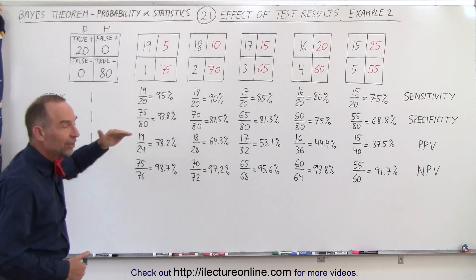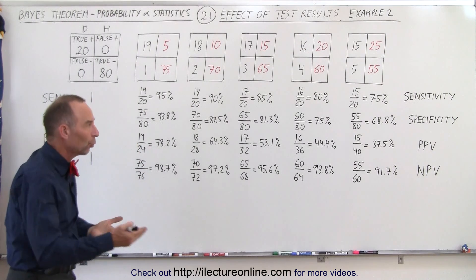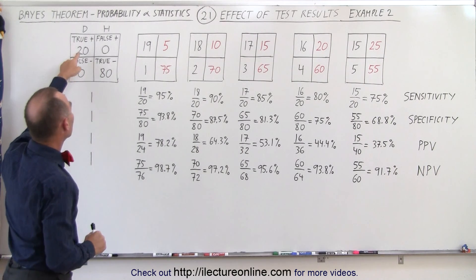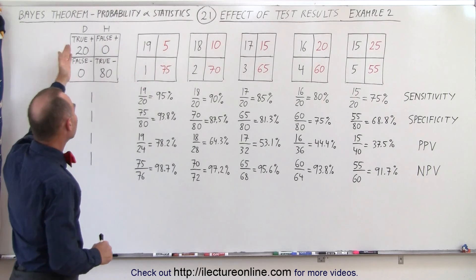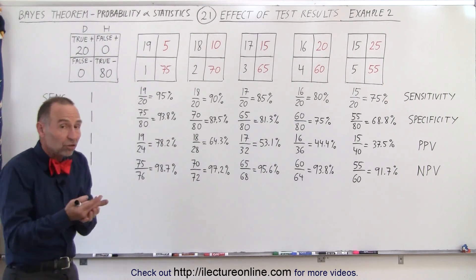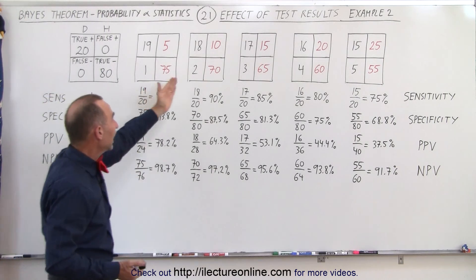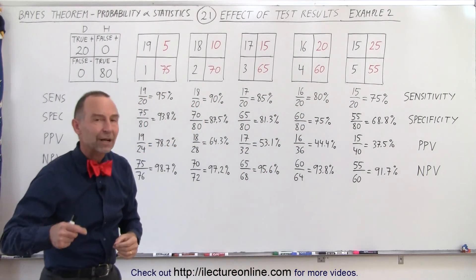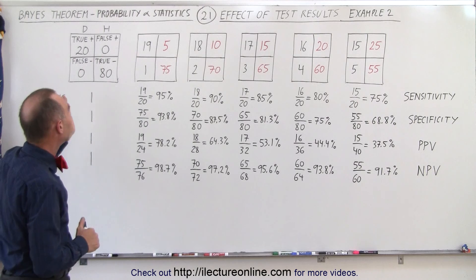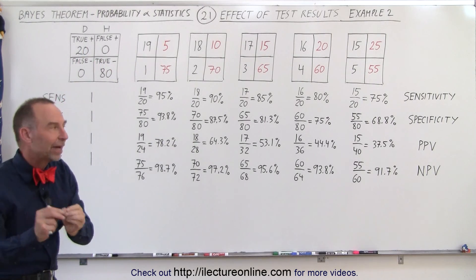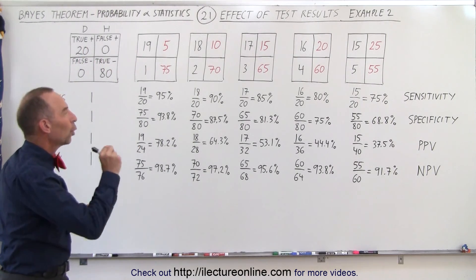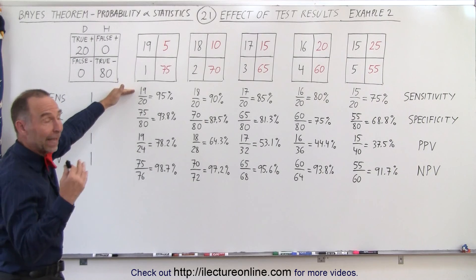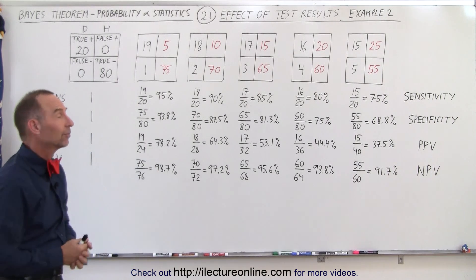It turns out that sensitivity is exactly the same in this example as it was in the previous example, because sensitivity only depends on the ratio of the number of people that actually test positive when they actually have the disease. Since that ratio didn't change — 19 out of 20, 18 out of 20, 17 out of 20, and so forth — the sensitivity of the test is the same here as it was in the last example where we did not have any false positives. Sensitivity only depends on the ratio of the number of people that test positive and truly have the disease, divided by the total number of people that have the disease.